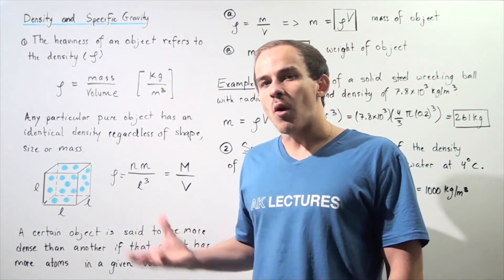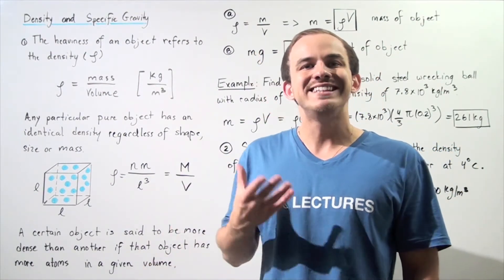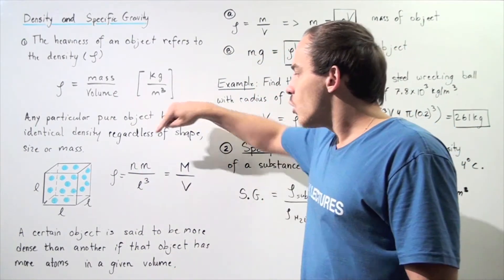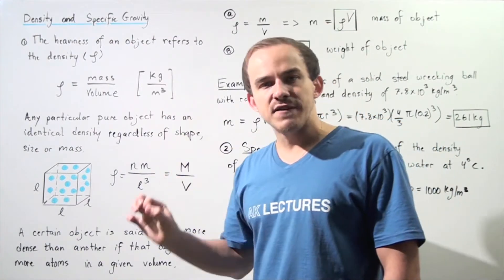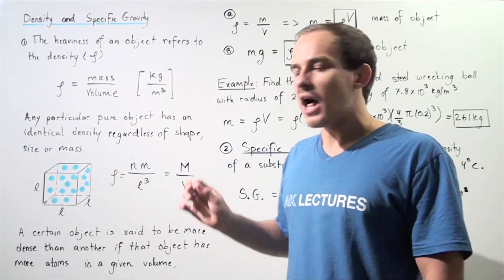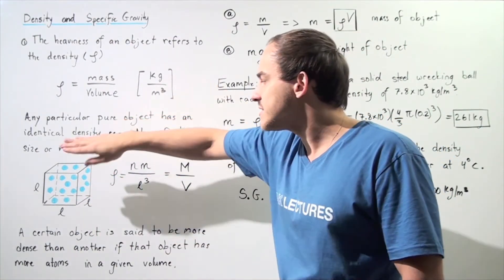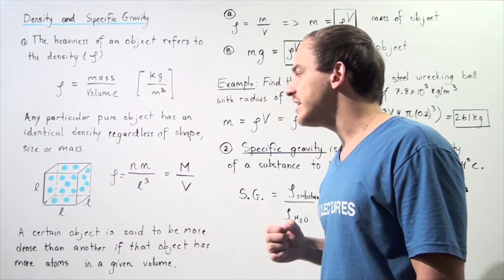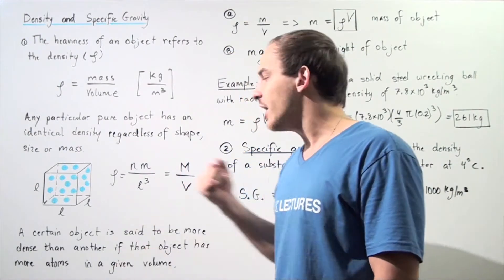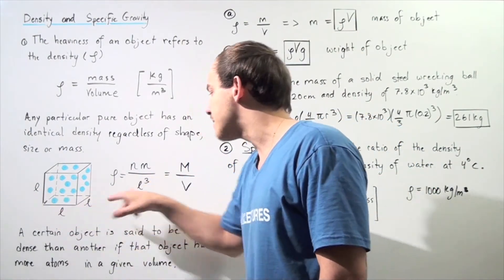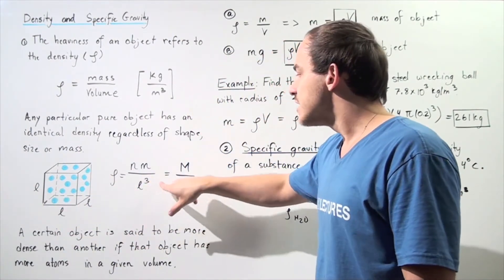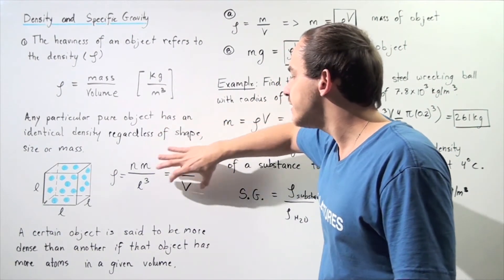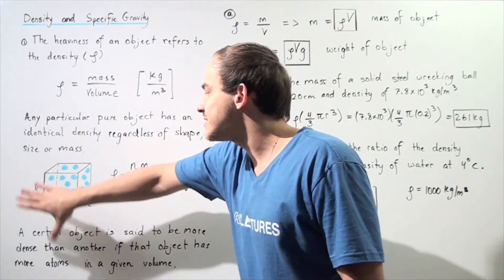Each atom has a mass lowercase m. Using those quantities, we can calculate the density using the following formula. We take the mass of the individual atom and multiply by the number of atoms N, and divide by the volume. Because we're dealing with a cube, the volume is L times L times L, or L cubed. This equals the total mass of our object divided by the volume.